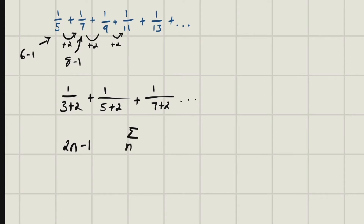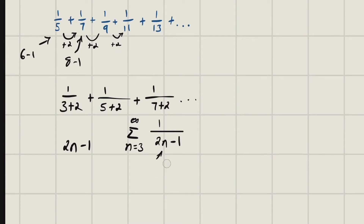If we do it this way, we start at an n value that gives us our first term. We want to get the value six, so n would equal three, and then we go to infinity: the sum from n=3 to infinity of 1/(2n−1). If n is three, we get 6−1=5; if n is four, we get 8−1=7. We're producing the correct values as we go.